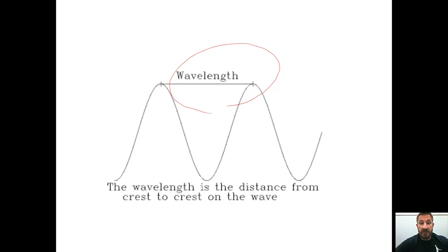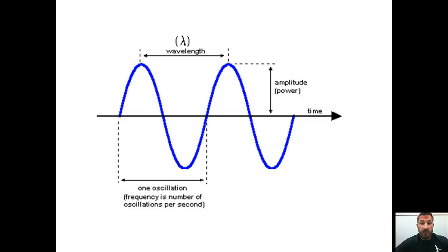Wavelength is the distance from crest to crest. It could also be the distance from trough to trough or any two adjacent points on the wave.